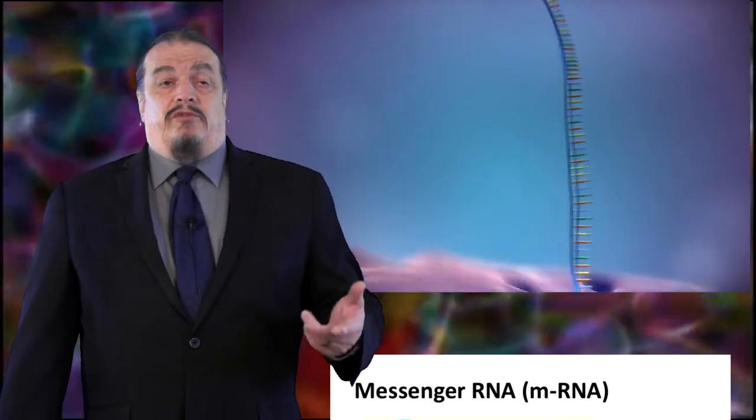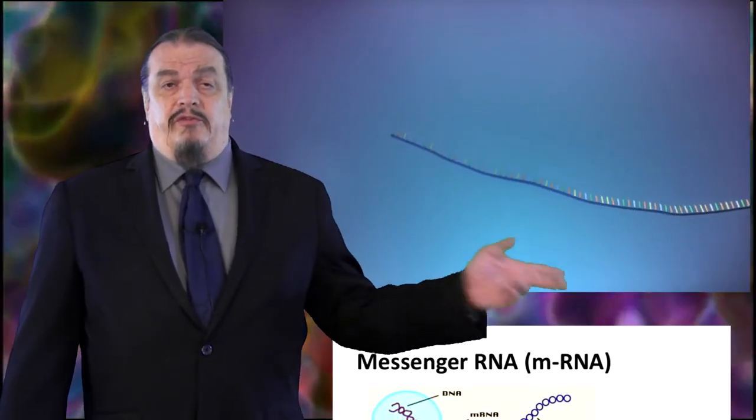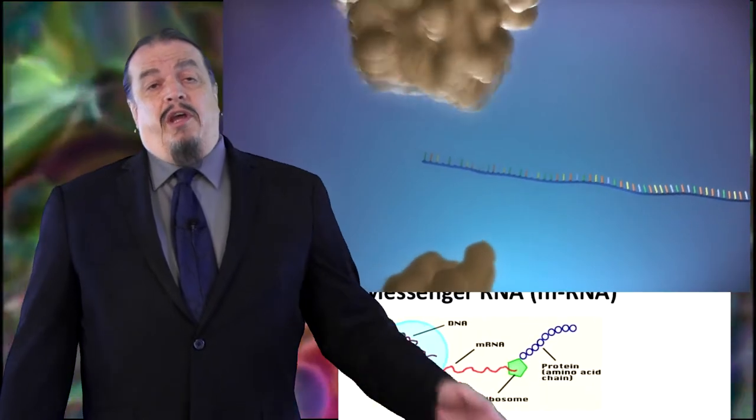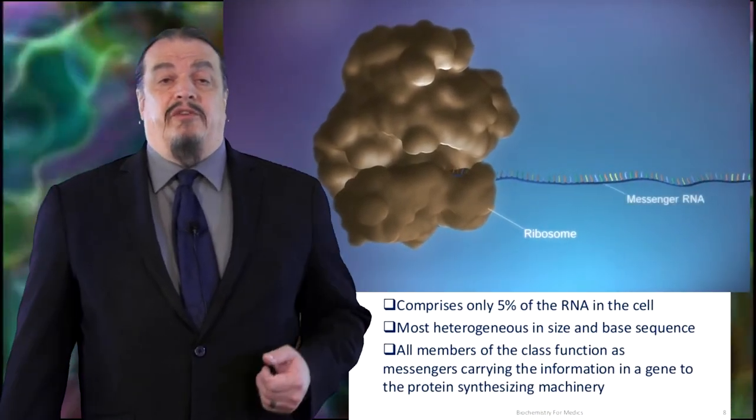And now that transcription is done, we have our messenger to take the instructions outside of the nucleus to the surrounding cytoplasm. In fact, the new strand is called messenger RNA. It basically delivers the instructions from your DNA in your cell's nucleus to your ribosomes in the cell's cytoplasm so they can start cranking out proteins.